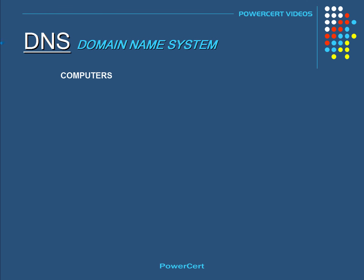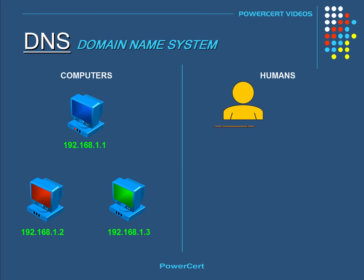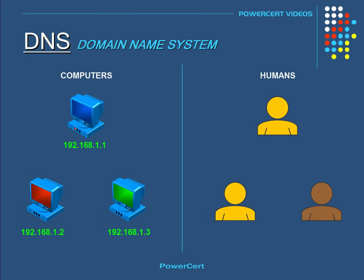In the world of networking, computers don't go by names like humans do. They go by numbers, because that's how computers and other similar devices talk and identify with each other over a network, which is by using numbers such as IP addresses. Humans, on the other hand, are accustomed to using names instead of numbers. Whether it's talking directly to another person or identifying a country, place, or thing, humans identify with names instead of numbers.